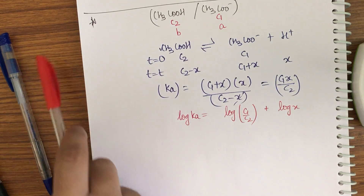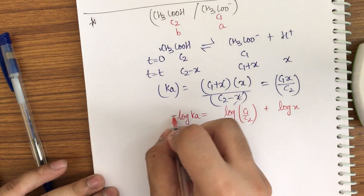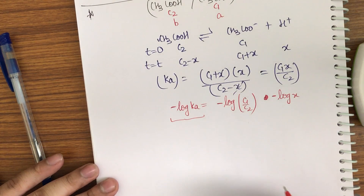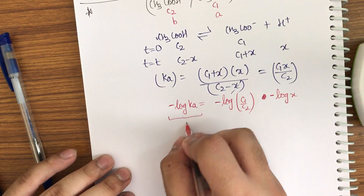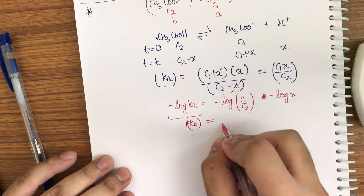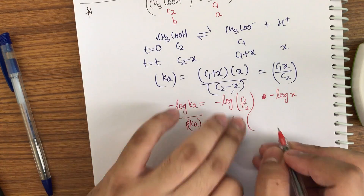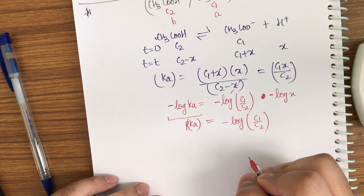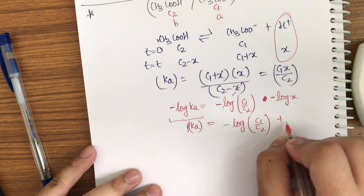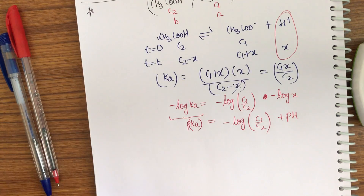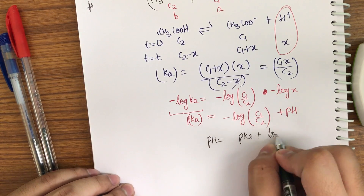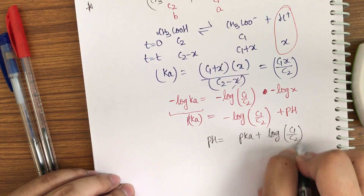Taking log of Ka = log(C₁/C₂) + log(x). Multiplying both sides by −1: −log(Ka) = −log(C₁/C₂) − log(x), which gives pKa = log(C₂/C₁) + pH. Rearranging: pH = pKa + log(C₁/C₂).